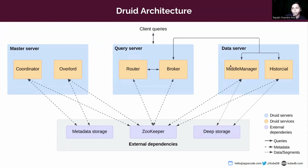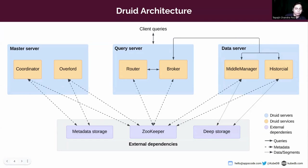The data server operations are divided into two services: middle manager and historical. Historical services handle storage and querying on historical data — they download segments from deep storage and respond to queries about those segments. So when you query data from Druid, it is queried from historicals that are loaded from deep storage. The middle manager service handles ingestion tasks, adding new data into the cluster. They are responsible for reading from external data sources and publishing new Druid segments.